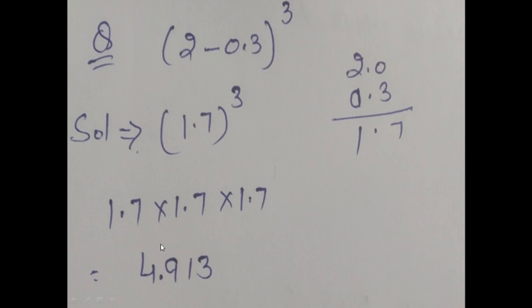Now mark the decimal point. You know how to mark the decimal — you will count the digits after decimal. Here, after decimal, it is one digit in each factor. Total digits after decimal are 3. In the answer, you will count 3 digits from right to left, mark the point here, and your answer will be 4.913.